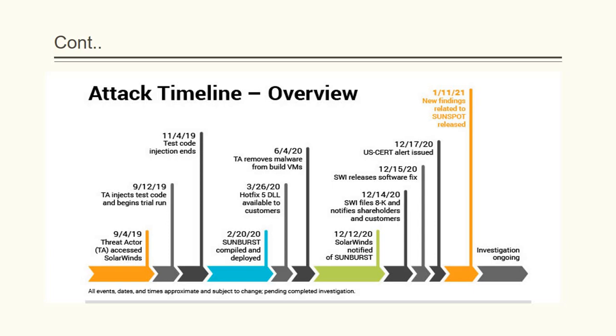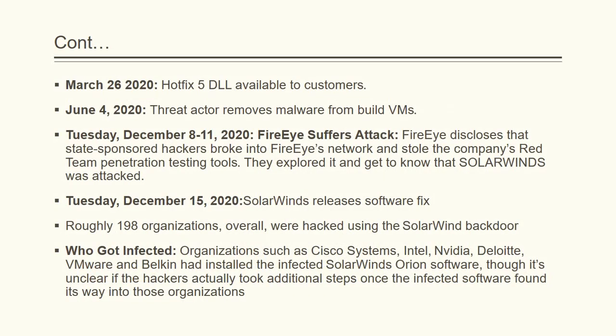The first organization to report the attack was FireEye. Around December 8th to 11th, FireEye was the first to detect that there was traffic communicating externally, showing as command and control activity. They figured everything out and determined that SolarWinds was involved and had been attacked, then explored all the details and contacted SolarWinds.